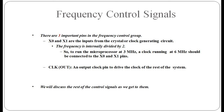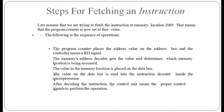For fetching an instruction, assume we are fetching the instruction at memory location 2005H, meaning the program counter is set to that value. The program counter places the address on the address bus, and the controller issues a read (RD) signal. The memory's address decoder determines which location is being accessed, places the value on the data bus, and the value is read into the instruction decoder inside the microprocessor, which then issues the proper control signals.